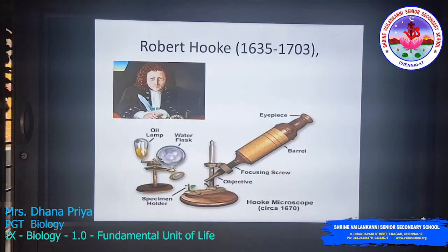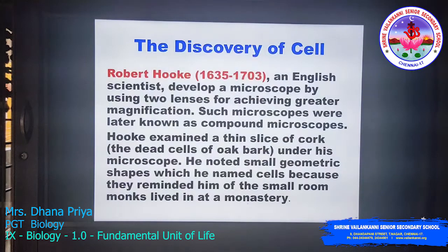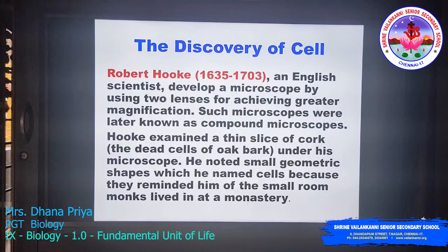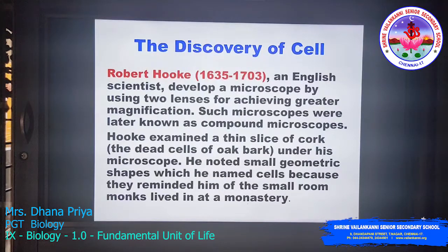Next is Robert Hooke and his microscope. Robert Hooke, an English scientist, developed a microscope using two lens sensors for achieving greater magnification. This was an upgraded version of Leeuwenhoek's microscope — the simple microscope was taken to the next level, and this new type of microscope was later known as the compound microscope. So Leeuwenhoek's microscope is called a simple microscope, while Robert Hooke's microscope is called a compound microscope.